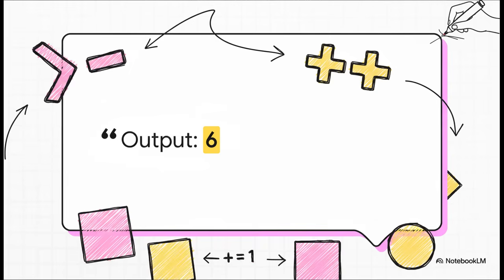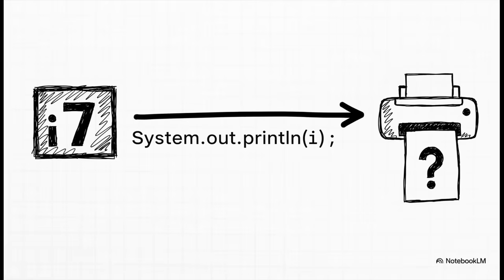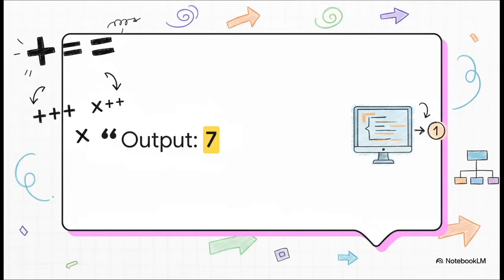So the program grabs the current value of i, which is six, and it sends that to be printed. After all that is done, kind of behind the scenes, i then gets updated to seven. So we know that last operation bumped it up to seven. It just did it quietly. So to prove it, what happens if we just print the value of i one more time? No operators, just i. And there it is. The output is seven. This confirms that the postfix operation from the last line absolutely did its job. It just did it after the value was used.